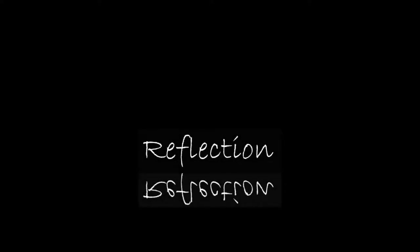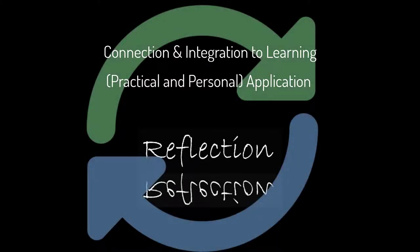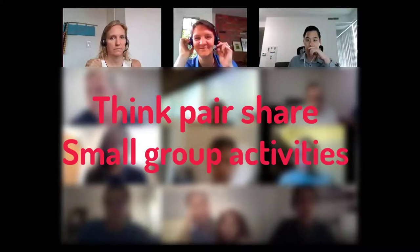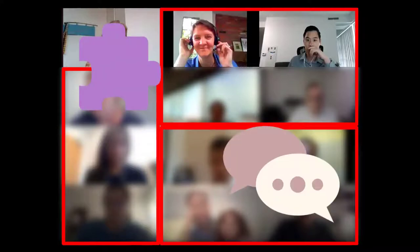Reflection allows for the connecting and integrating of ideas before applying them to a real-world context. Without time to reflect on how information fits into our own practical world, new knowledge may seem irrelevant and easily forgotten. Breakout rooms may help with learner reflection in a social learning setting, like think-pair-share or small group table discussions or tasks. This tool allows you to move learners into smaller, separate meeting spaces to discuss or collaborate before coming back to the main room to share ideas.